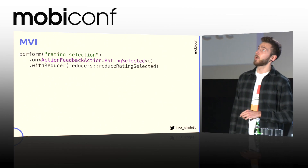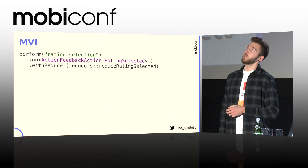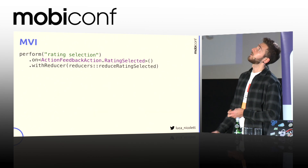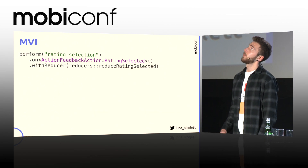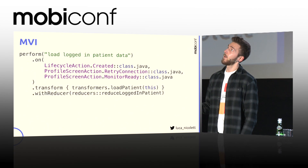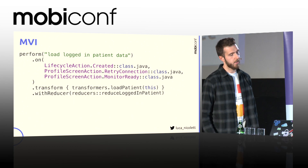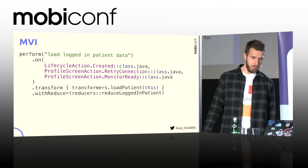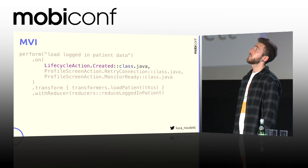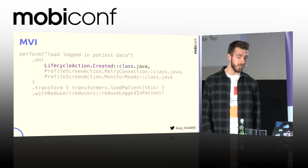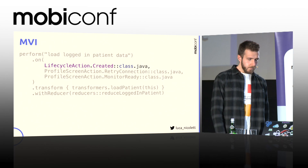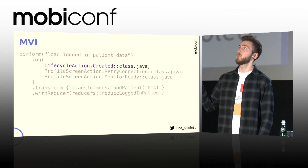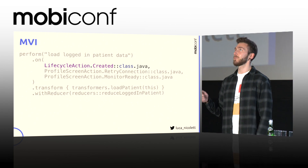This is an example of our middleware code — the perform action just states what's going on. In this scenario, the action of the user selecting a rating is reduced by generating a new state via a reducer. We can also map different actions to the same transformers and reducers. And as I said before, we can also map lifecycle events — in this example, it's the onCreate lifecycle event of an activity. This just loads the user data, so as soon as the activity starts, the data of the user is being loaded.